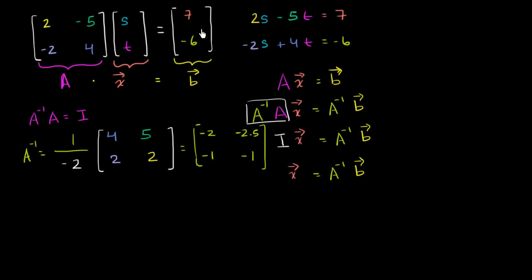So now let's multiply A inverse times our column vector, seven, negative six, so let's do that. So this is A inverse, I'll rewrite it. Negative two, negative two point five, negative one, negative one, times seven and negative six.